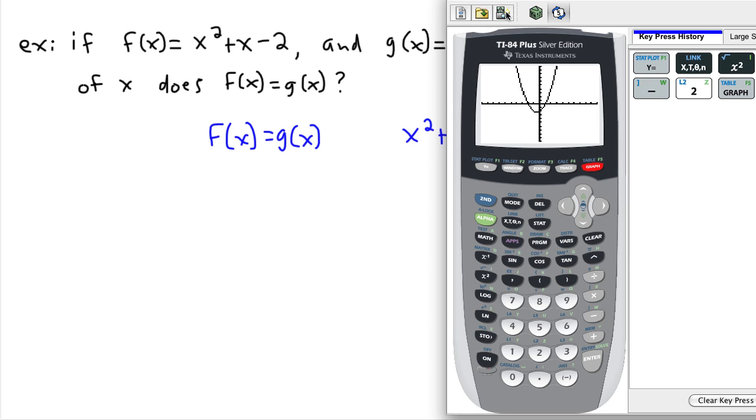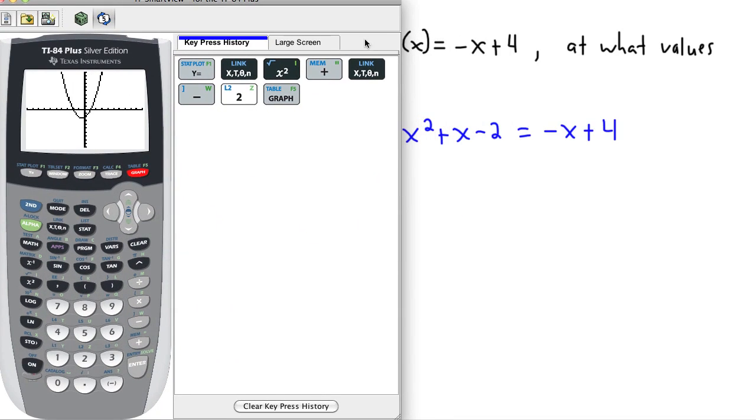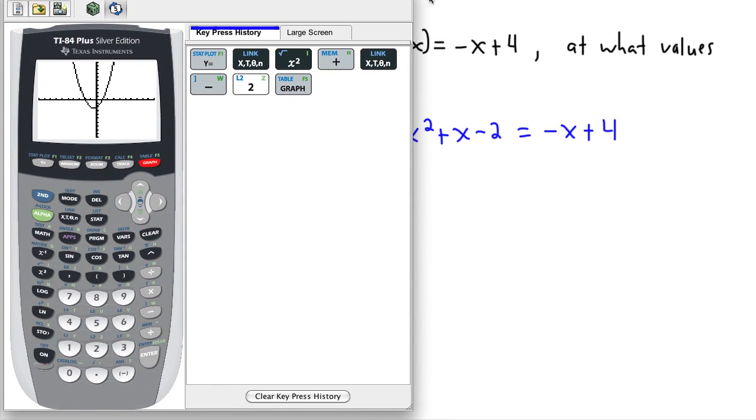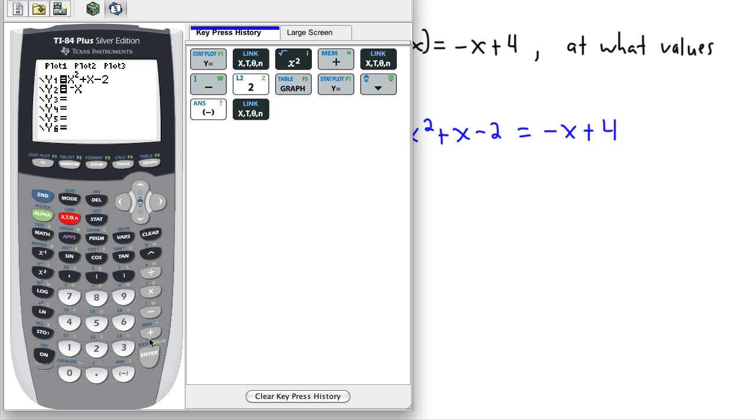Now we have to look at this other graph here, this g of x, which is negative x plus 4. So I'm going to graph a second equation and I want negative x plus 4. If I graph that now, I can also predict what this one looks like. There's no power of 2 here, so this is not a quadratic. This is actually a straight line graph. I know that it has a y-intercept of positive 4 and has a slope of negative 1. So if I do graph, now it's going to show me both graphs.